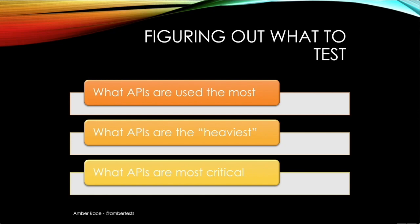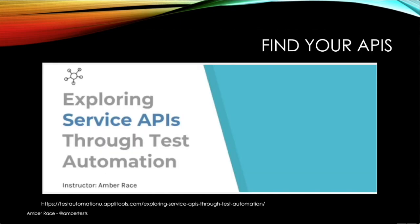Once you understand the system, you need to figure out where to pinpoint your tests. What are the APIs that are used the most? What are the APIs that take up the most energy, or memory, or time in your system? And what APIs are the most critical — which are the ones that you really can't afford to have go down? For more information about how to dig out the APIs your client is using, I recommend the course 'Exploring Service APIs Through Test Automation' on Test Automation U.